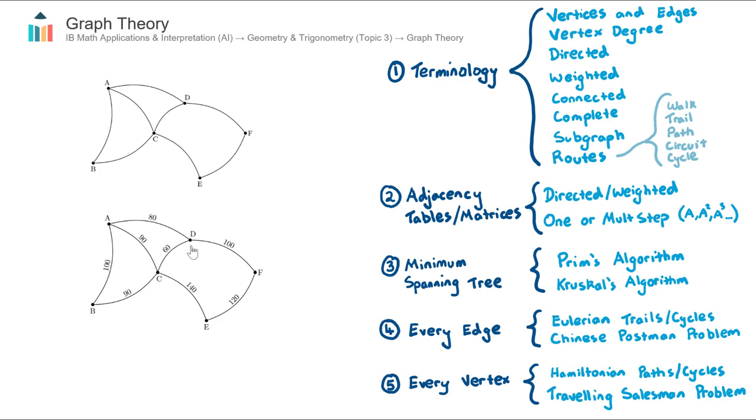So we can see there that to go from C to D might take 60 minutes, as opposed to E to F, which would take 120 minutes. Let's now talk about connected graphs. At the moment, both of these graphs are connected.